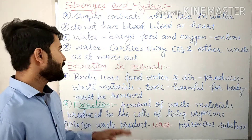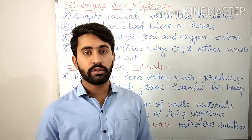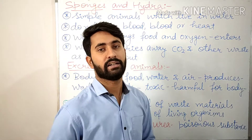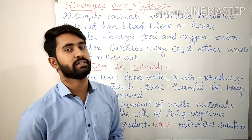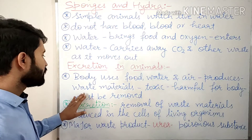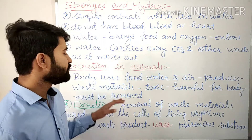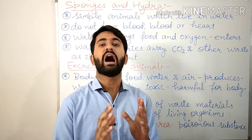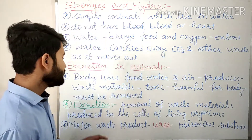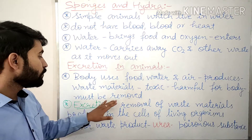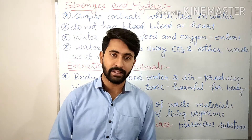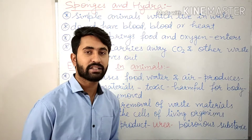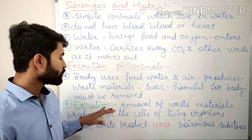Now we will learn about excretion in animals. We eat food, drink water, and breathe in air. When our body uses food, water, and air, it produces some unwanted substances that are known as waste materials. These waste materials are toxic, or we can say they are poisonous, so they are harmful for our body. These waste materials should be removed from our body so that the person remains healthy. The removal of waste materials produced in the cells of living organisms is called excretion.